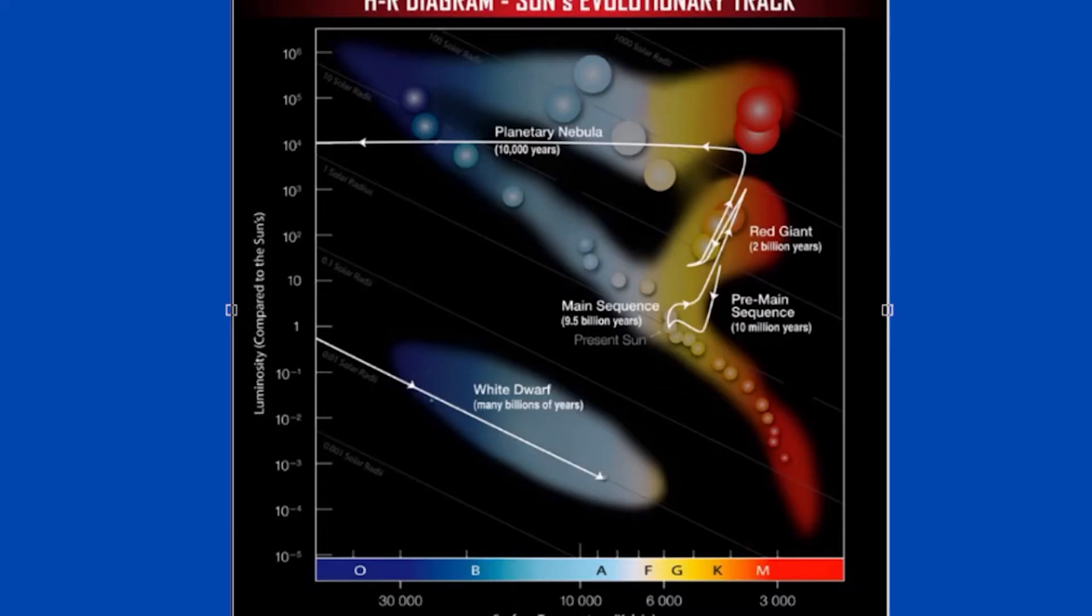But as far as the main sequence stars are concerned, we can generally say that the brighter a star is, the hotter it would be because it follows this gradient in this graph.